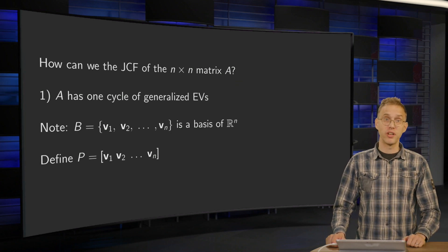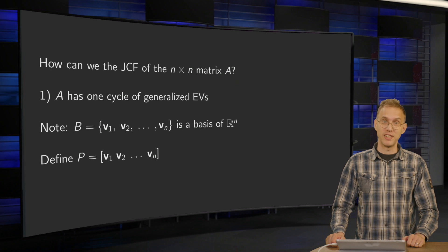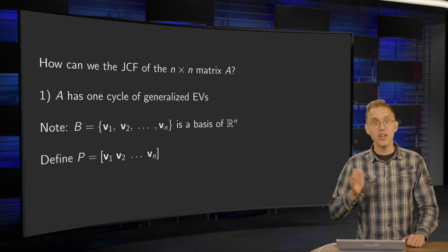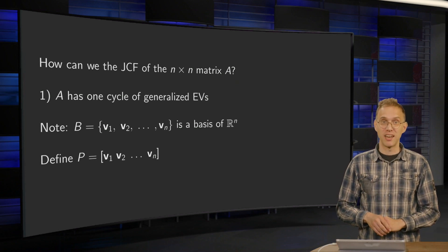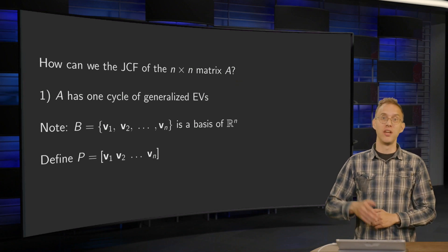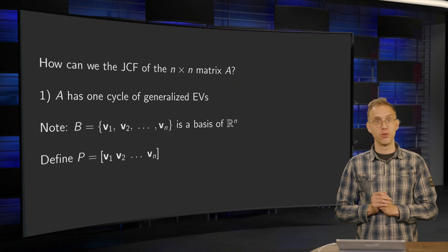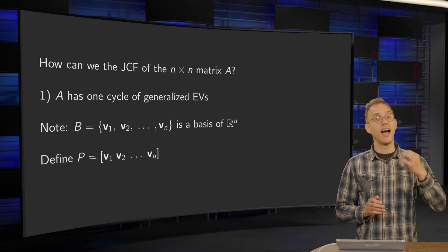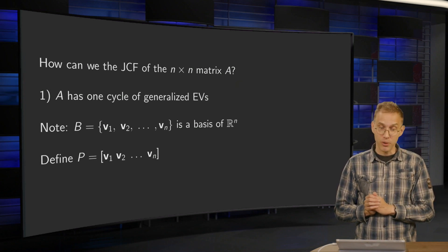How can we find a Jordan canonical form of a matrix? The answer lies in the cycles of generalized eigenvectors. If you have those cycles for a matrix A, you can immediately write down the Jordan canonical form of this matrix A. In this video, you will learn how you can do this.